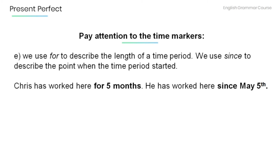We use for to describe the length of a time period, and we use since to describe the point when the time period started. For example: Chris has worked here for 5 months — that's the length of the time period. He has worked here since May 5th — May 5th is the point when the time period started.